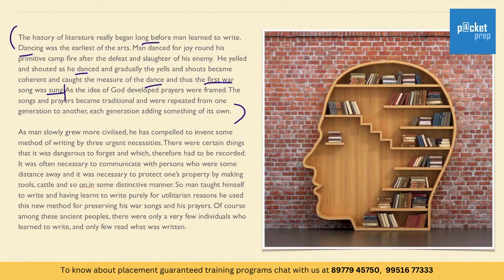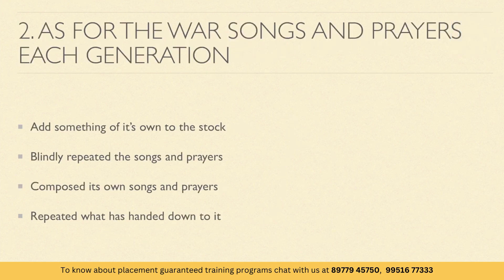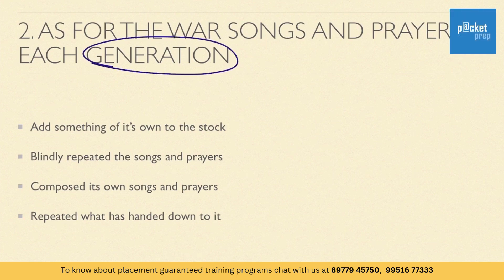The answer to the first question is in the first three lines itself — 'literature was just singing and dancing' is the relevant option. Here is the next question: as for the war songs and prayers, each generation — here 'generation' is a keyword. Let's search for this word in the passage and read that complete line to grasp the meaning and get the answer.